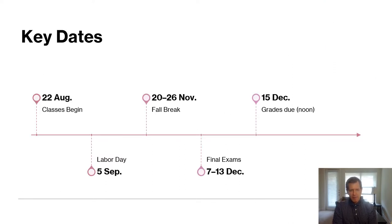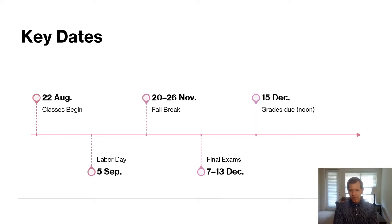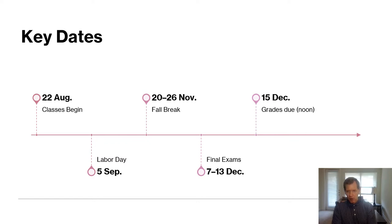Here are some key dates. August 22nd is when classes begin. We've got Labor Day, September 5th — that really won't affect your course since this is an online course. November 20th through November 26th is your fall break, and I will not have anything due during those dates. Final exams are December 7th through 13th. We do not have a traditional final exam in this course, although I do have a final paper that is due. December 15th is when grades are due at noon.